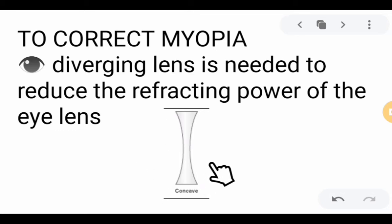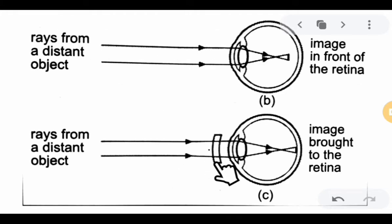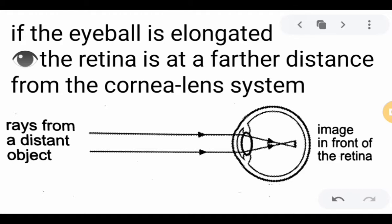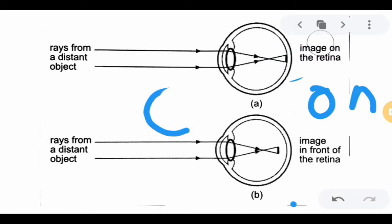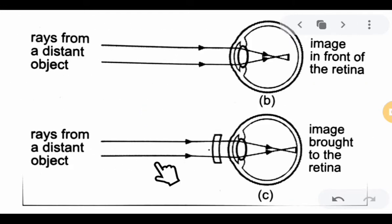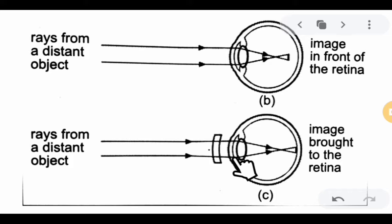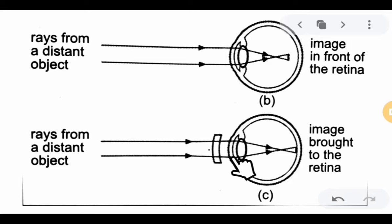This diverging or concave lens is needed to reduce the refracting power of the eye lens. If you place a diverging lens in front of your eye, the image will be formed on the retina instead of in front of it. The diverging or concave lens automatically reduces the refracting power of the eye lens, correcting the excessive bending caused by the bulging cornea. That is how you correct myopia or nearsightedness.